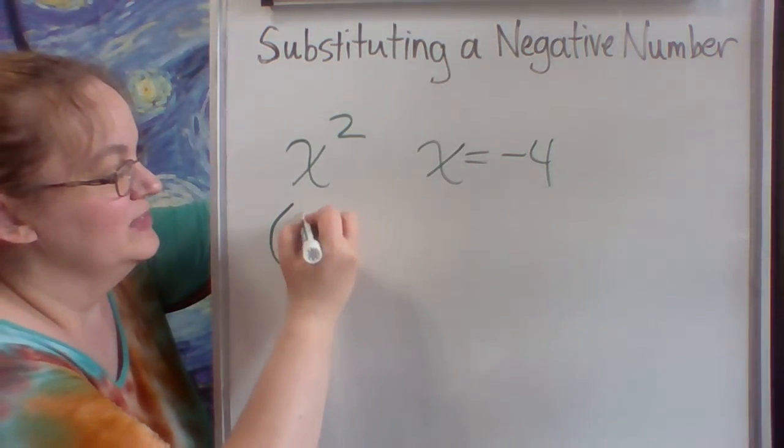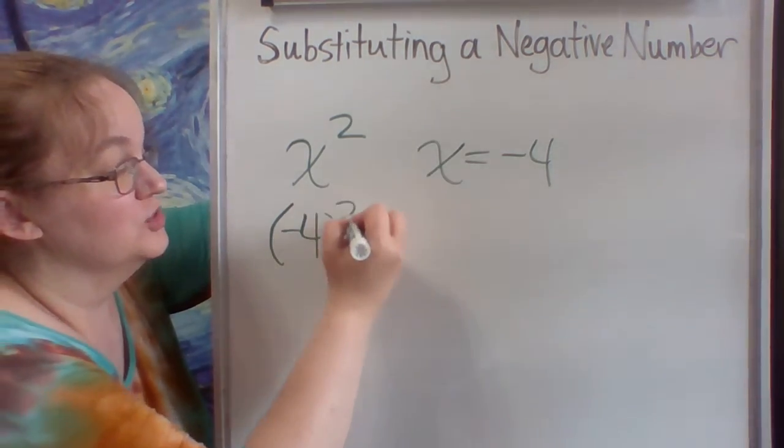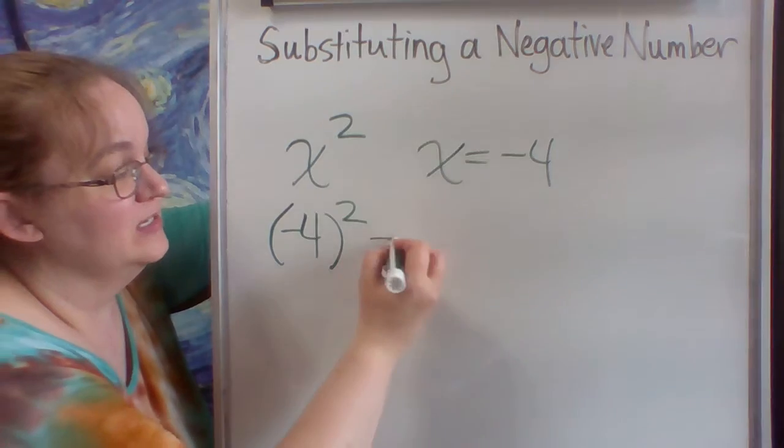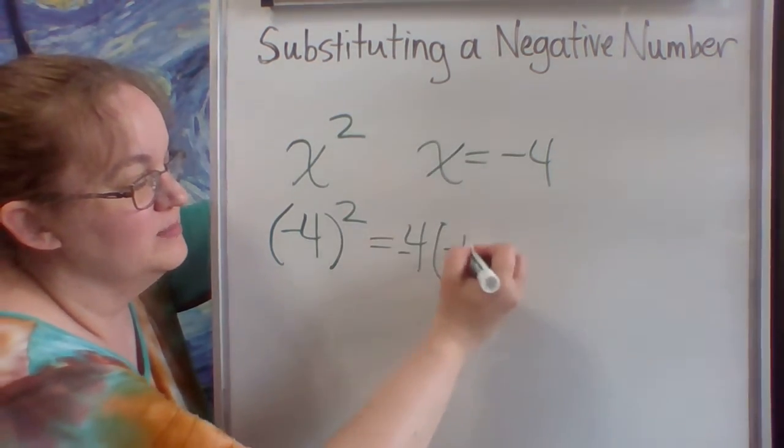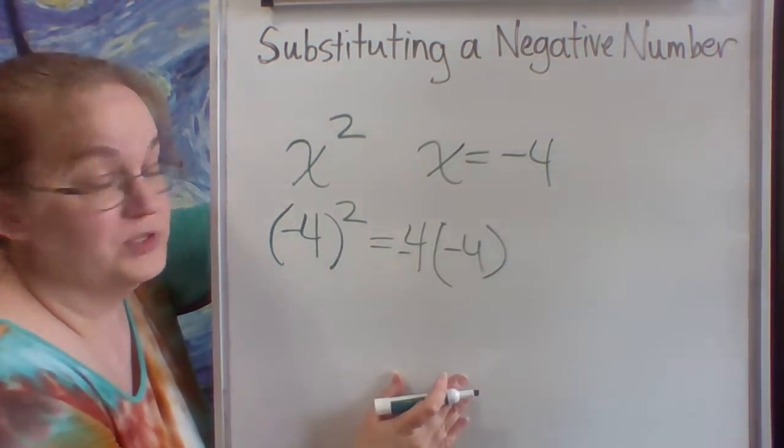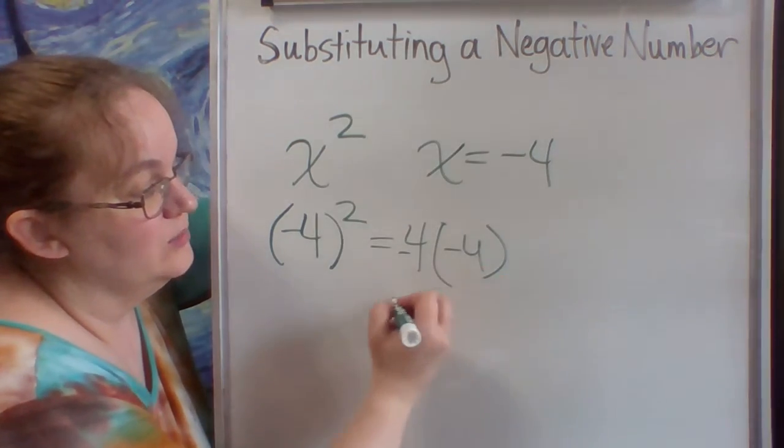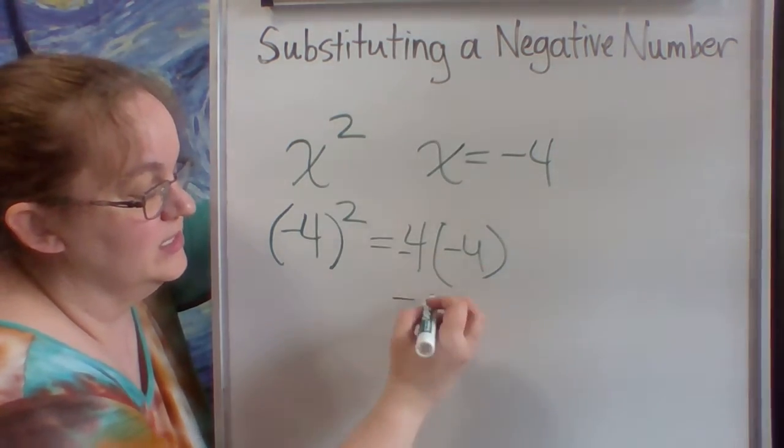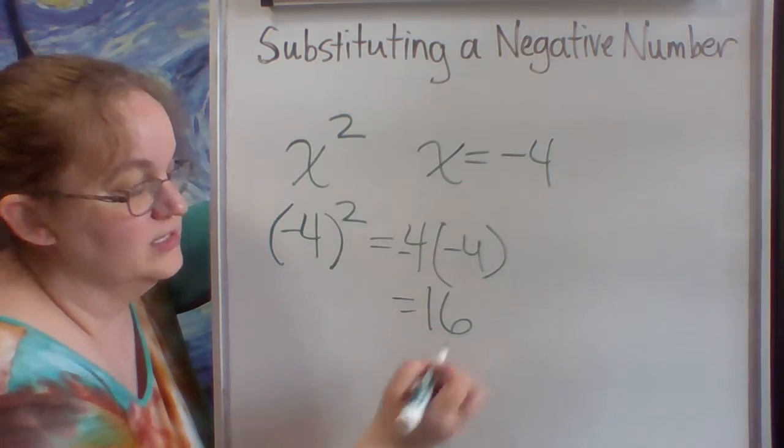OK, this means that's negative 4 squared, which means that's equivalent to negative 4 times negative 4. And 4 times 4 is 16. And when you have two negatives, they cancel each other out. So it's just positive 16.